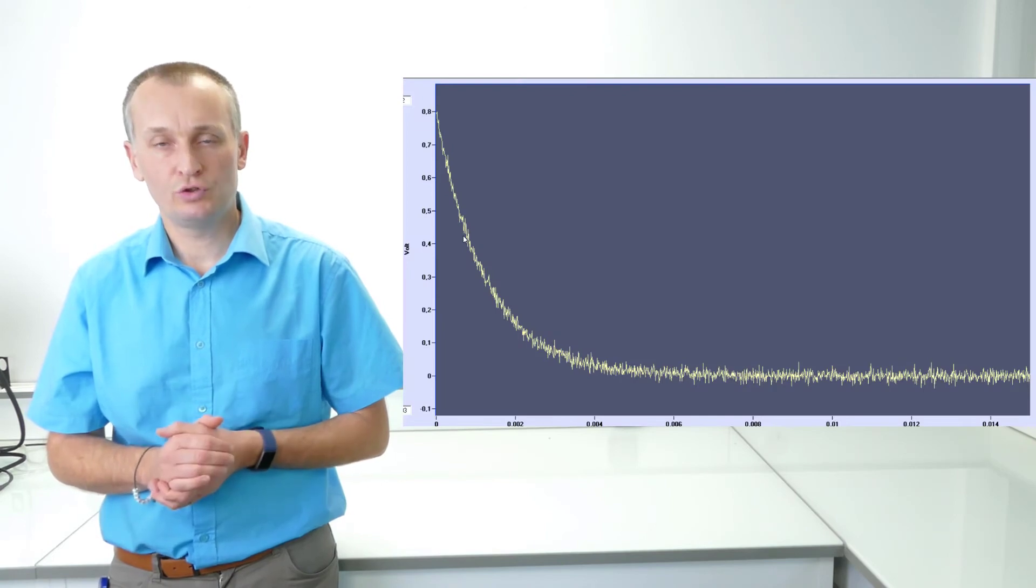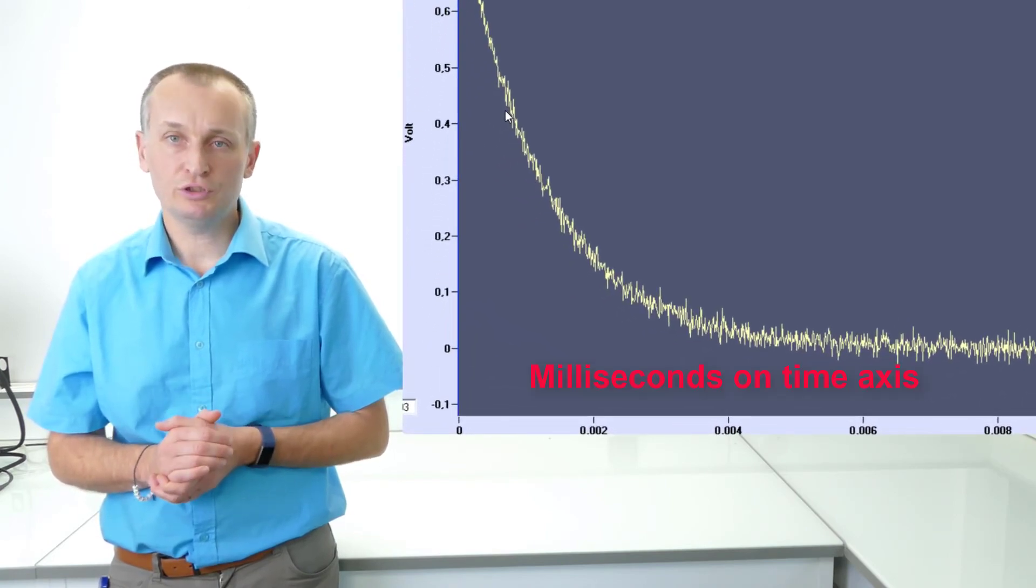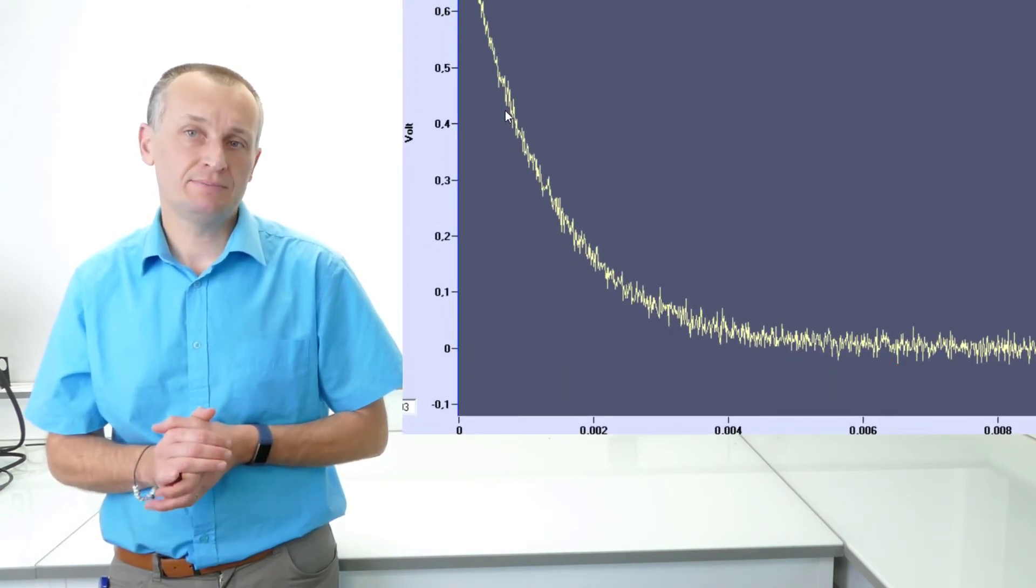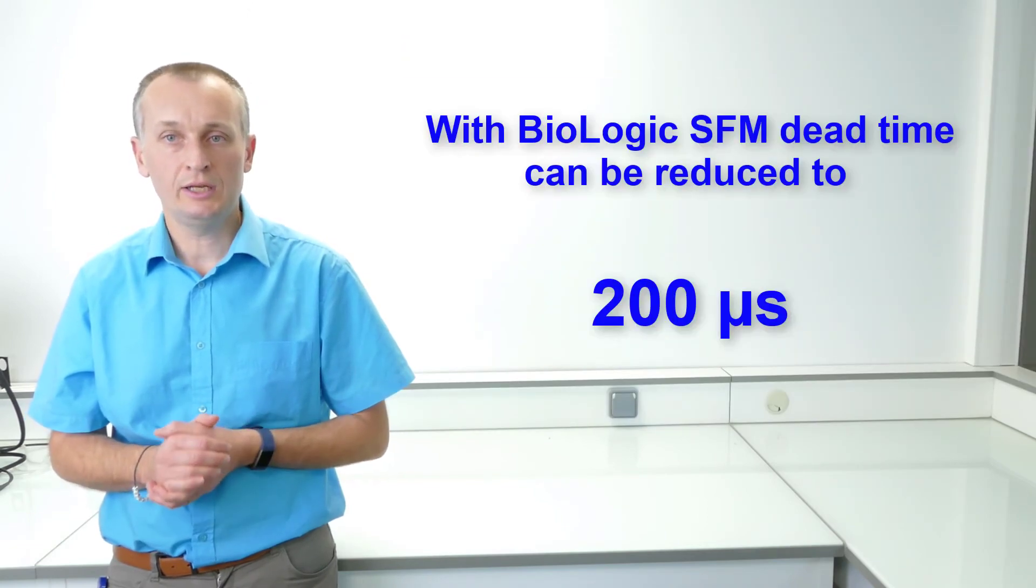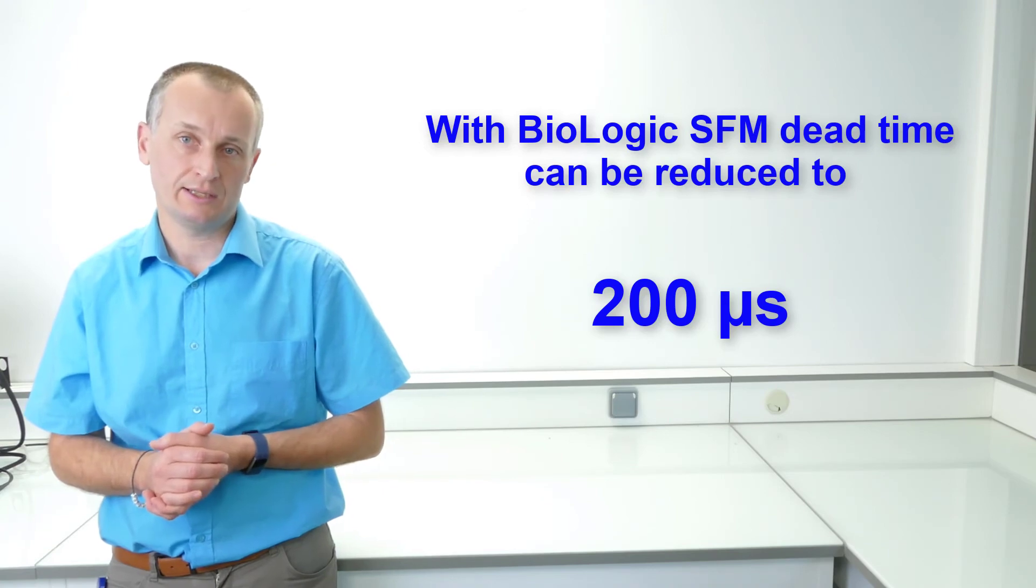The dead time of a stop flow is directly linked to the size of the cuvette you are using. In most configurations, the dead time is between 0.5 ms and 1 ms. But using the micro-cuvette accessory, you could reach 200 microseconds dead time.